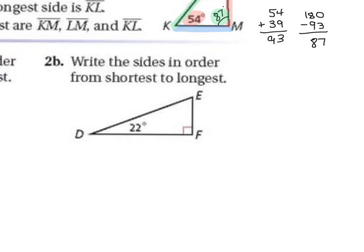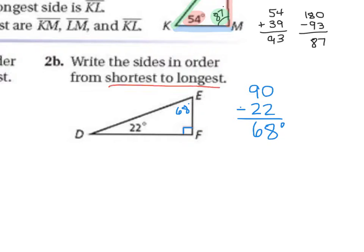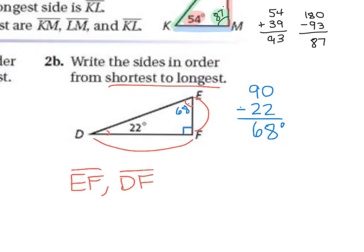Problem 2B: write the sides in order from shortest to longest. Two of the three angles are given — 22 degrees and 90 degrees — so the missing angle is 90 minus 22, which is 68 degrees. The shortest side is opposite the smallest angle, which is 22 degrees, giving us side EF. Next is side DF, opposite the 68-degree angle at E. The largest side is DE, opposite the 90-degree angle. Order from shortest to longest: EF, DF, DE.